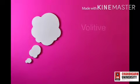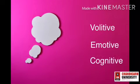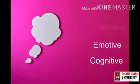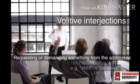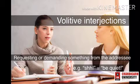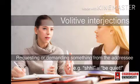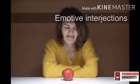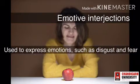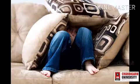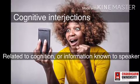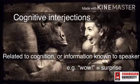Generally, interjections can be classified into three types of meaning: volative, emotive, or cognitive. Volative interjections function as imperative or directive expressions, requesting or demanding something from the addressee. Emotive interjections are used to express emotions such as disgust and fear. Cognitive interjections express feelings which are more related to cognition or information known to the speaker of the utterance.